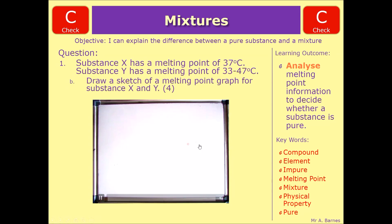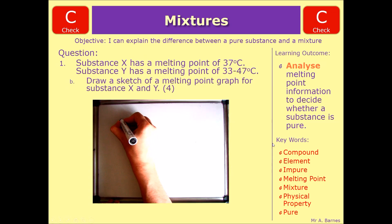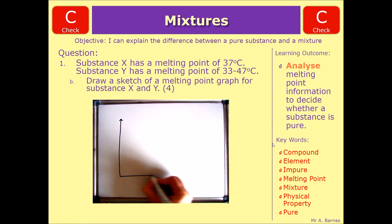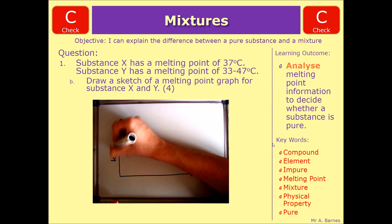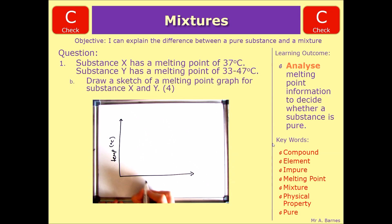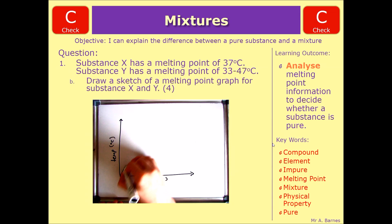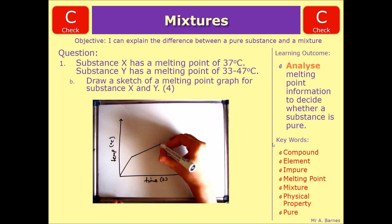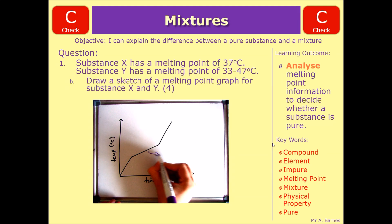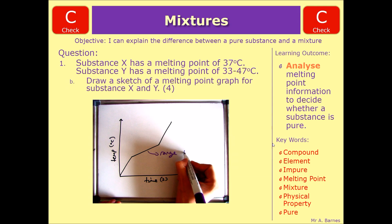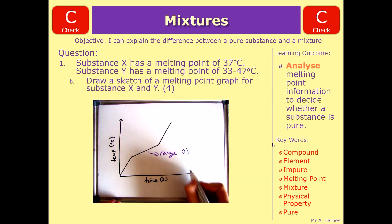For substance Y, it's very similar. Start off by drawing your axes and label them with temperature and with time, then draw your curve. Bearing in mind the range will be higher here - the range it melts over means you need to have some sort of diagonal line. That range gives you your one mark. You will then get marks for the rest of it being correct and for the axes.